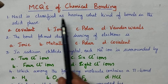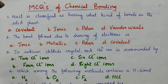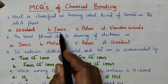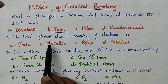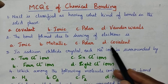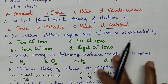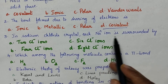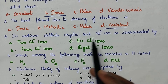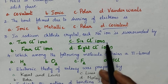NaCl is classified as having what kind of bonds in the solid phase. In the solid phase, NaCl has an ionic bond. A covalent bond is formed due to the sharing of electrons. In a sodium chloride crystal, each sodium ion is surrounded by 6 chloride ions.